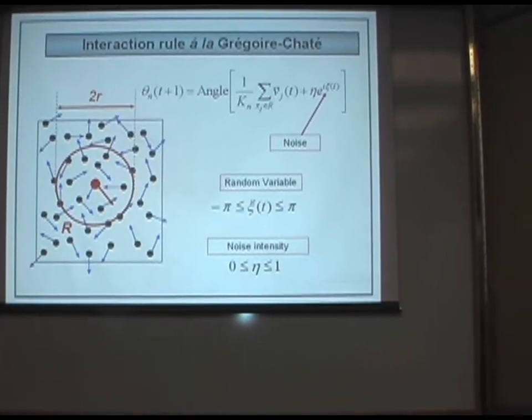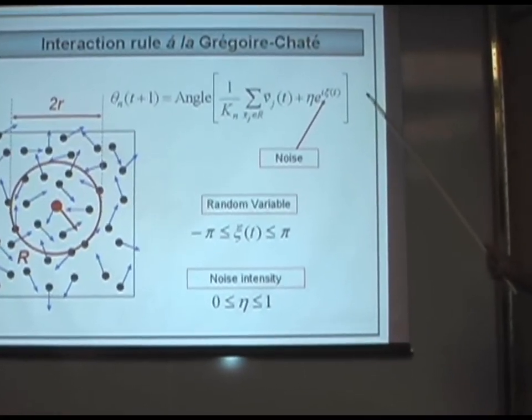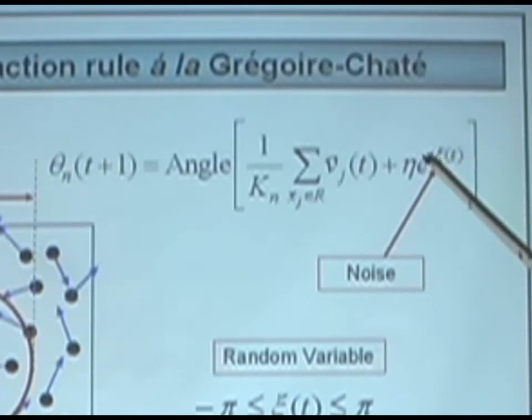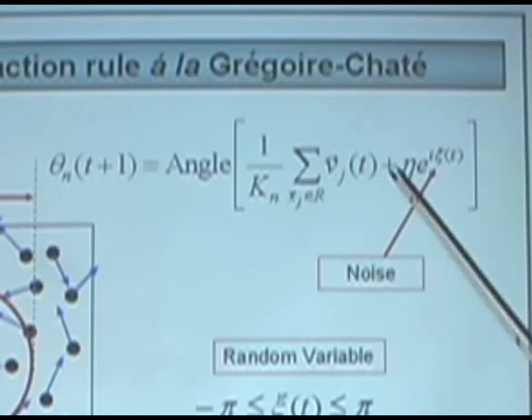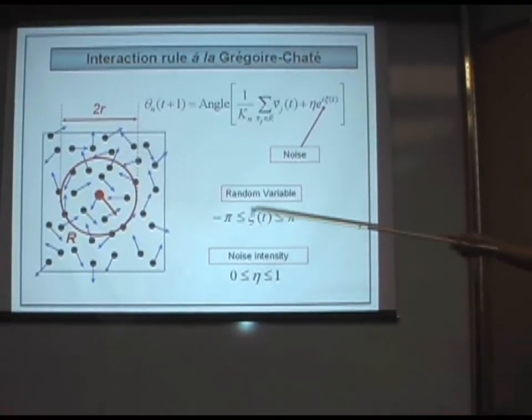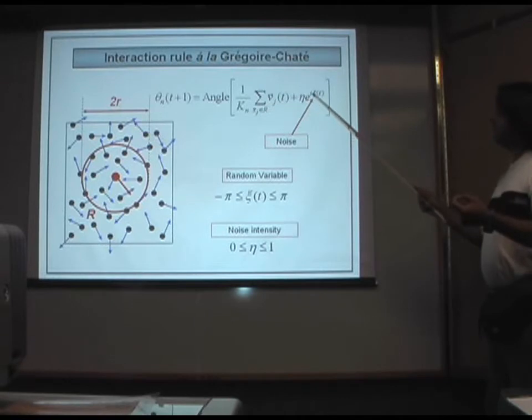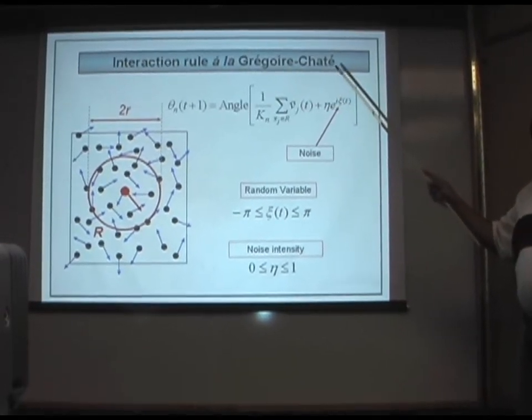Grégoire and Chaté cheated a little bit. They changed the way in which the noise is introduced into the system. Instead of adding the noise outside the angle function, they put it inside. They said, well, this is okay, this is a change, but we hope that this doesn't have consequences in the phase transition. But here, the interaction rule, the biological or physical interaction rule is changing, because now we know exactly the decision mechanism of the particles is the angle function, but then the particles receive a blurred signal. It's like they cannot see the environment very well, and they receive a signal from the neighbors but with some noise, because probably the environment is blurred.